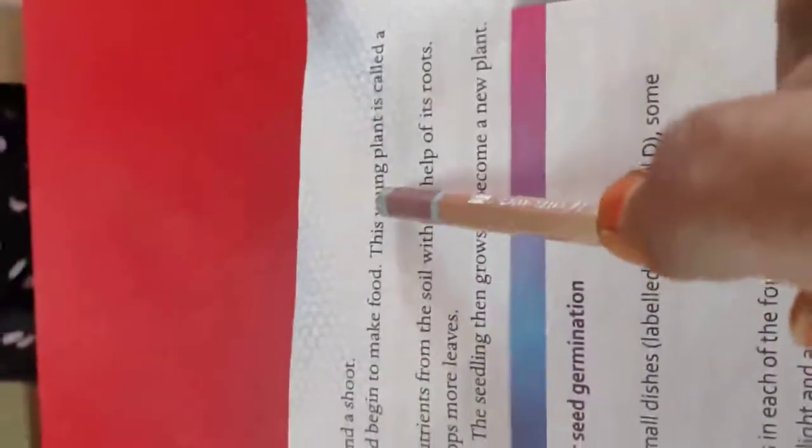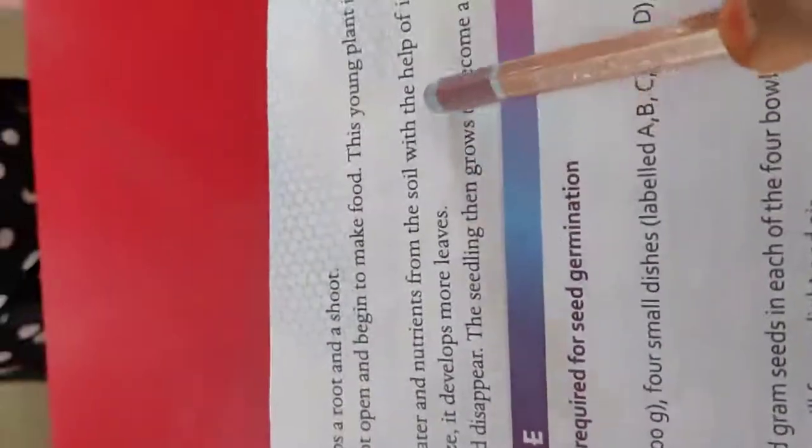The young plant is called seedling and the seedling absorbs water and nutrients from the soil with the help of the roots. The plants grow in size and develop more leaves. The cotyledon shrink and disappear as the seedling grows into a new plant.